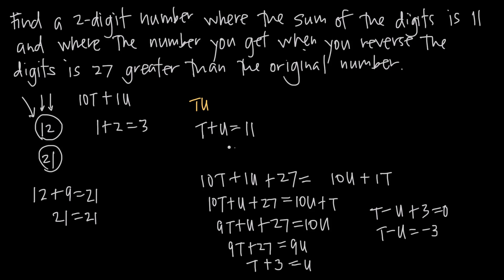What you can see now is that we actually have a system of linear equations. If we bring this up here, we have t minus u equals negative 3. We have two equations defined in terms of two variables. So this is just a systems of equations problem.